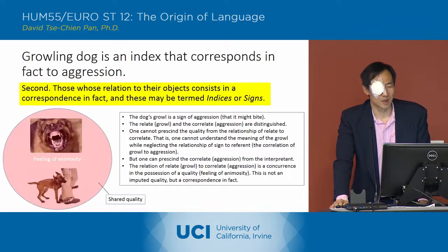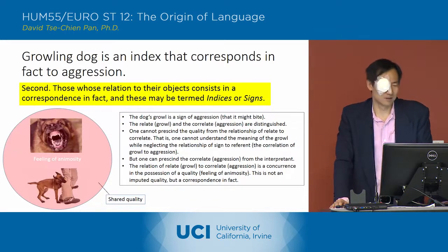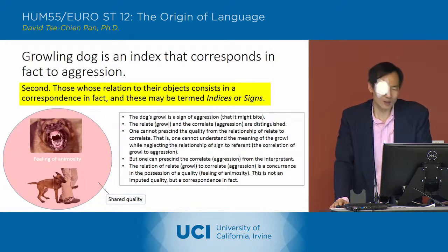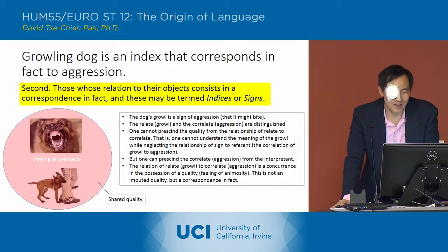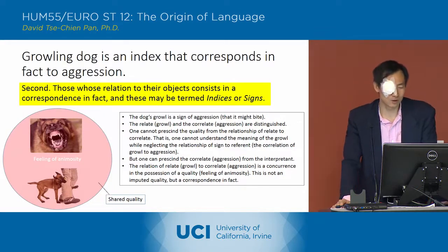Let's move to the next example. The next example is an example of index, and I'm going to use a growling dog as an index that corresponds, in fact, to aggression.